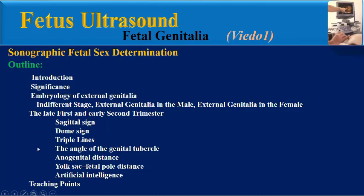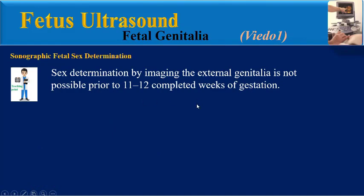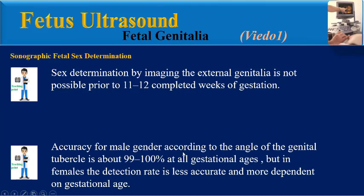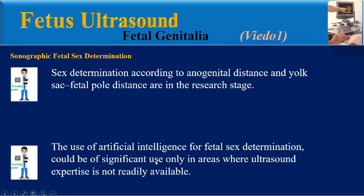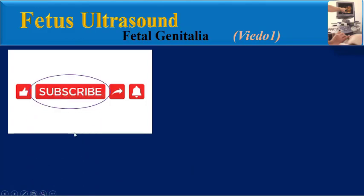Final teaching points: Sex determination by imaging the external genitalia is not possible prior to 11 to 12 completed weeks of gestation. Accuracy for male gender according to the angle of the genital tubercle is about 99 to 100% at all gestational ages, but in females the detection rate is less accurate and more dependent on gestational age. Sex determination according to anogenital distance and yolk sac fetal pole distance are in the research stage. The use of artificial intelligence for fetal sex determination could be of significant use only in areas where ultrasound expertise is not readily available. Thank you for your attention.